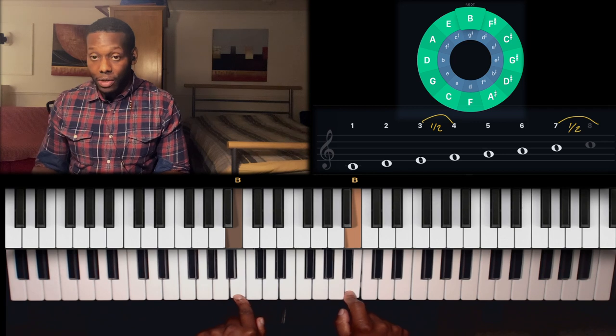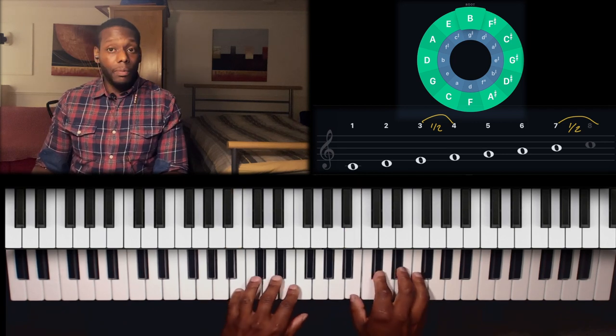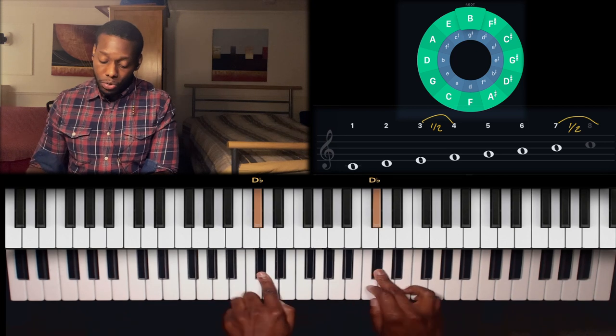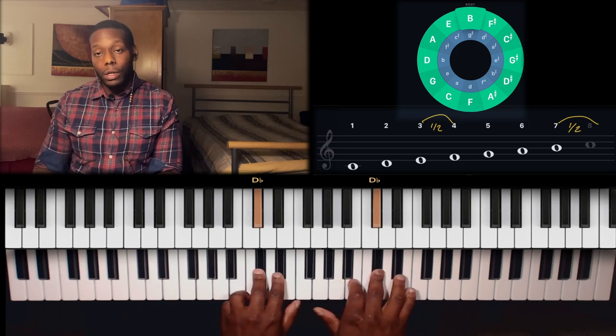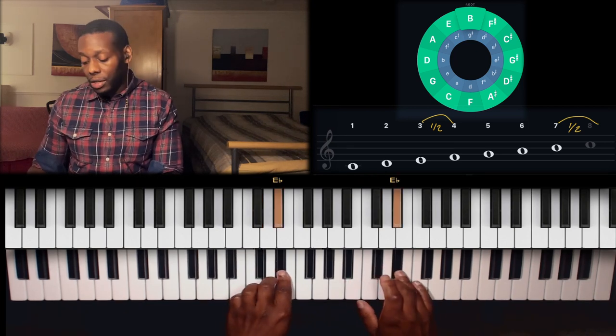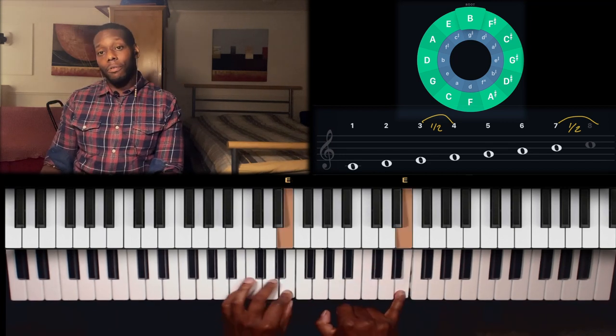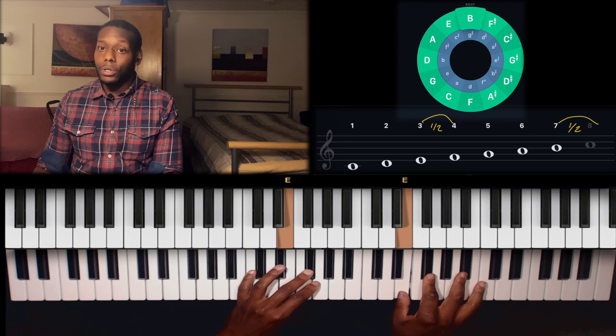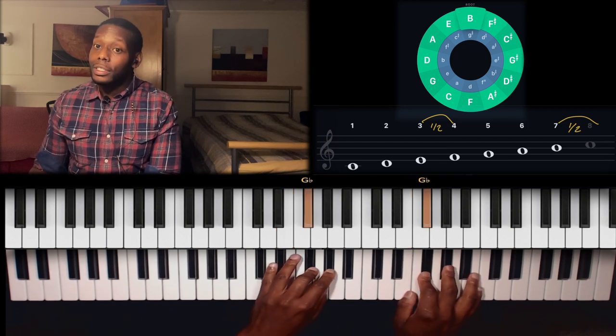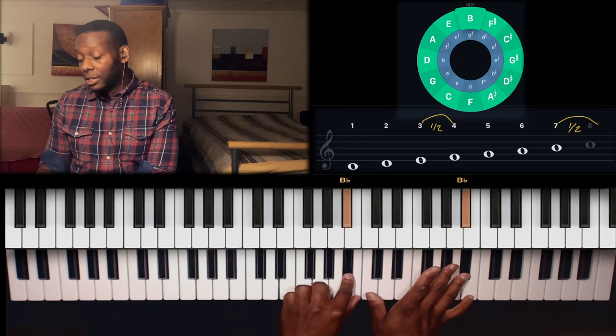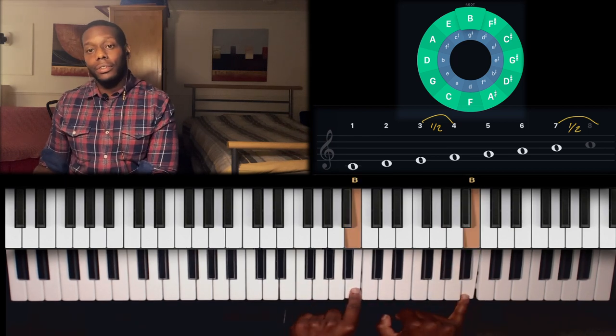So let's start from B. Let's see, there's got to be a full step, two, because there's a note in between. Full step again, three, there's a note in between. Between the three and the four, half a step. Four, back to full tones. Five, six, seven, and between the seven and the eight, half a step. There you go.